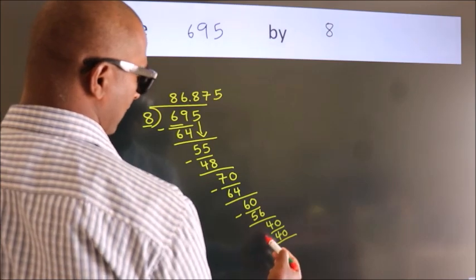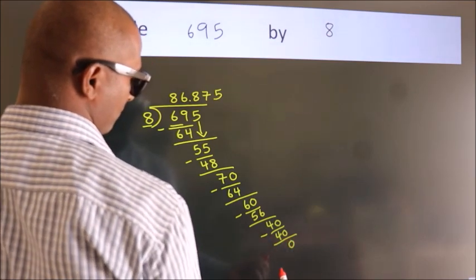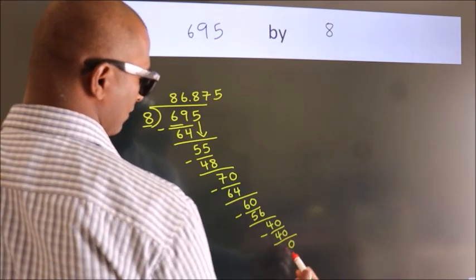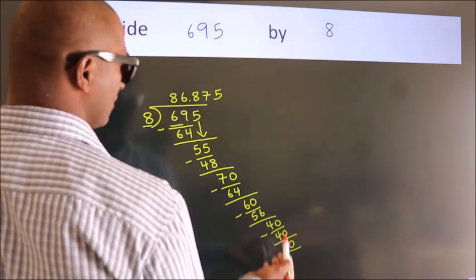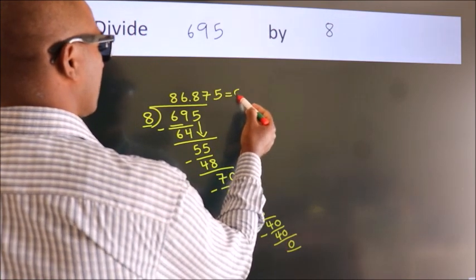Now we subtract. We get 0 here. We got remainder 0, so this is our quotient now.